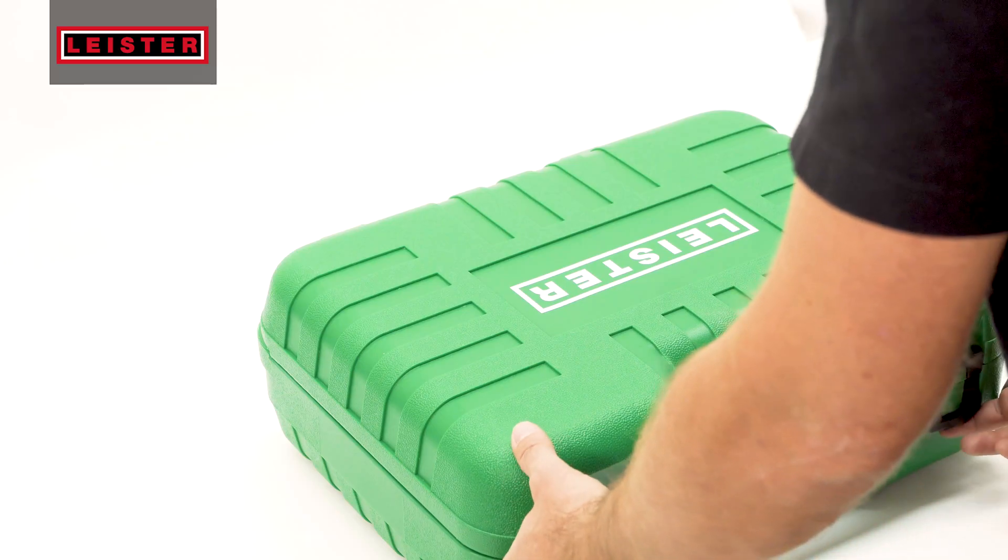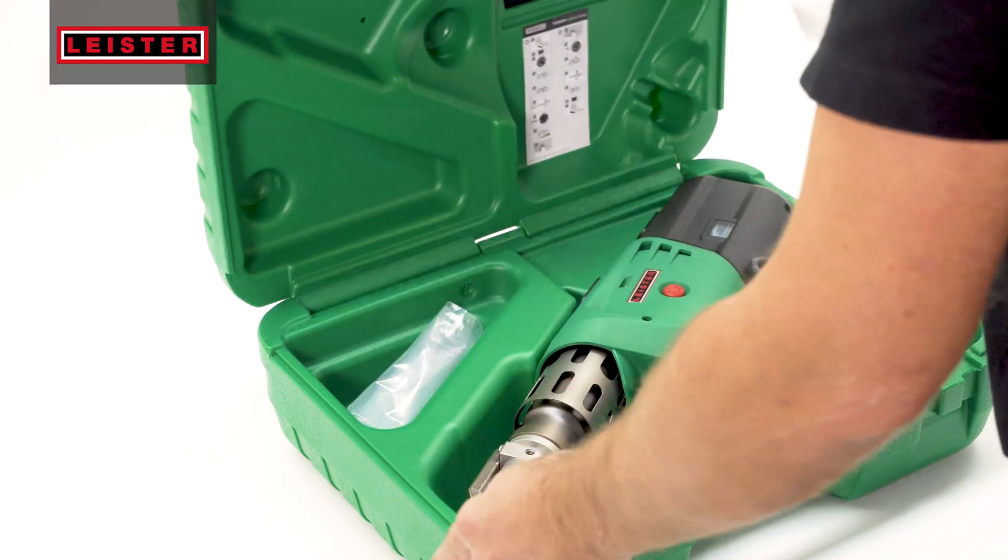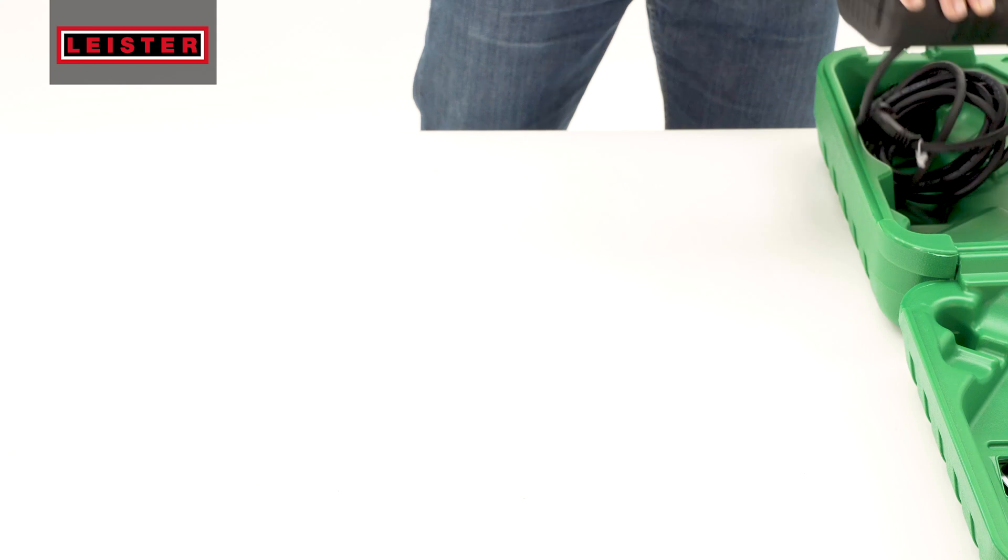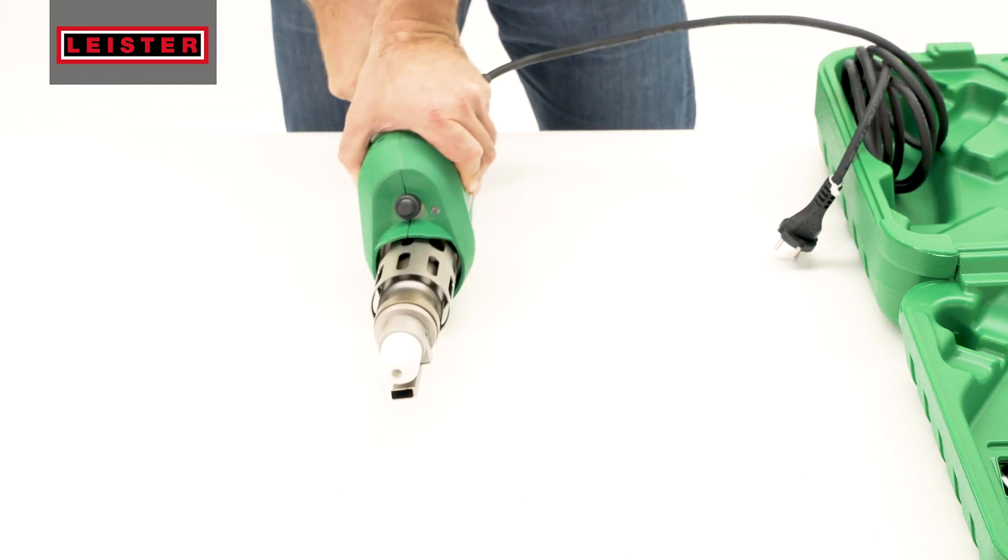The Fusion One is packed in a carrying case along with a welding shoe and pistol grip. To begin, place Fusion One on its side on a clean surface.